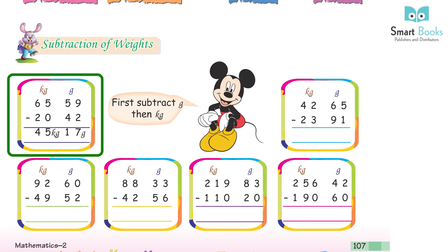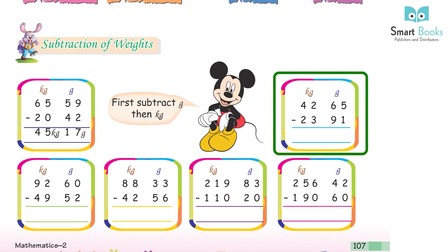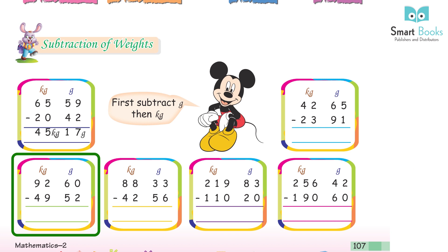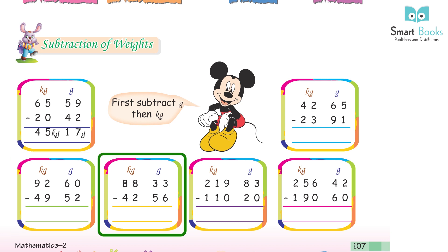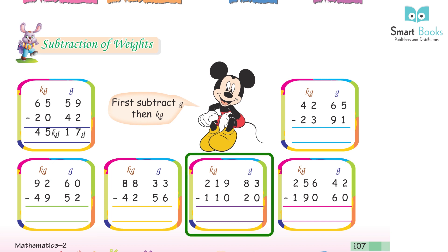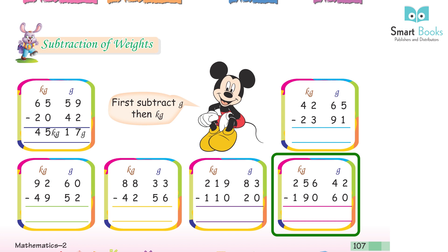Subtraction of weights: 65 kg 59 g − 20 kg 42 g = 45 kg 17 g. First subtract grams, then kilograms. 42 kg 65 g − 23 kg 91 g = 18 kg 74 g. 92 kg 60 g − 49 kg 52 g = 43 kg 8 g. 88 kg 33 g − 42 kg 56 g = 45 kg 77 g. 219 kg 83 g − 110 kg 20 g = 109 kg 63 g. 256 kg 42 g − 190 kg 60 g = 65 kg 82 g.